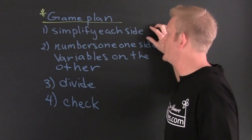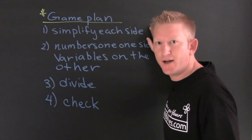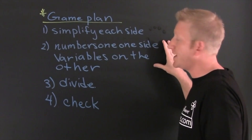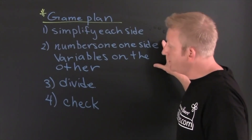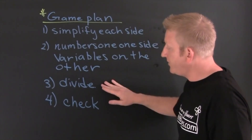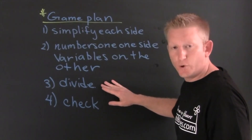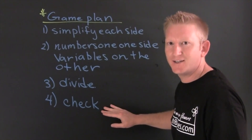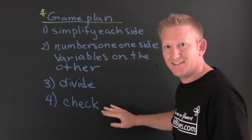First, what we're going to do is we're going to simplify each side. Then we need numbers on one side and variables on the other. Third, we're going to divide. Fourth, we're going to check. Check it.